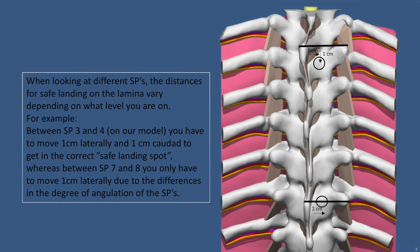When looking at different spinous processes, the distances for safe landing on the lamina vary depending on what level you are at. For example, between spinous processes 3 and 4, you have to move 1 cm laterally and 1 cm caudad to get to the correct safe landing spot. Whereas between spinous processes 7 and 8, you only have to move 1 cm laterally, due to differences in the degree of angulation of the spinous processes.